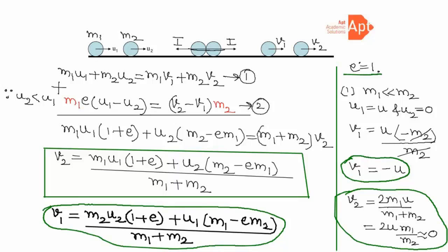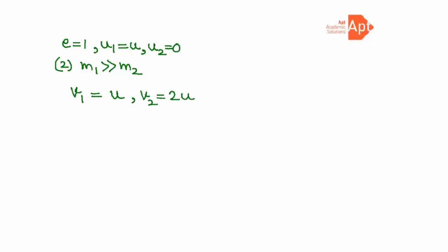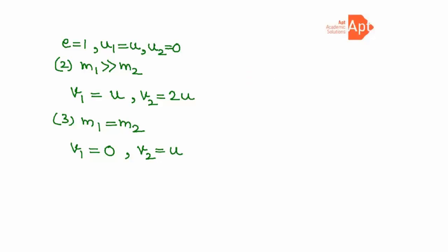For practice, you can verify the other cases with e = 1. Case 2: m1 is very large compared to m2, u1 = u, u2 = 0 — you get v1 = u and v2 = 2u. Case 3: m1 = m2 (equal masses, perfectly elastic collision) with u1 = u and u2 = 0 — you get v1 = 0 and v2 = u.